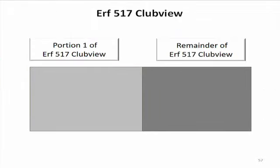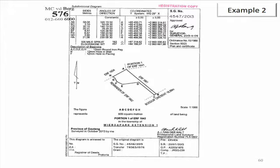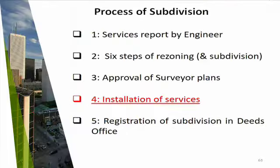Now we have a property with an approved diagram and municipal approval to subdivide. If you look at your examples you will see a typical subdivisional diagram indicating portion one and then the remainder. The next step — step four — is installation of services. The engineer said I need another electrical connection and a new sewer connection, and those services must be installed before we can proceed, because we cannot transfer a property that is not serviced.